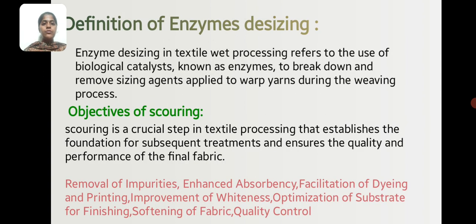Definition of Enzyme Desizing. Enzyme Desizing in Textile Wet Processing refers to the use of biological catalysts known as enzymes to break down and remove a sizing agent applied to the warp yarn during the weaving process.